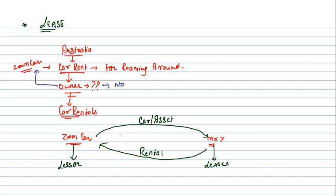So any agreement where the asset is transferred from the owner to another person for use, and that other person pays a rental amount in return for the use of that asset, is called a lease. For example, if you take a house on rent and pay rent for a specified period, you don't own it — that is also a lease, because the owner gave his house for use and charged rent.